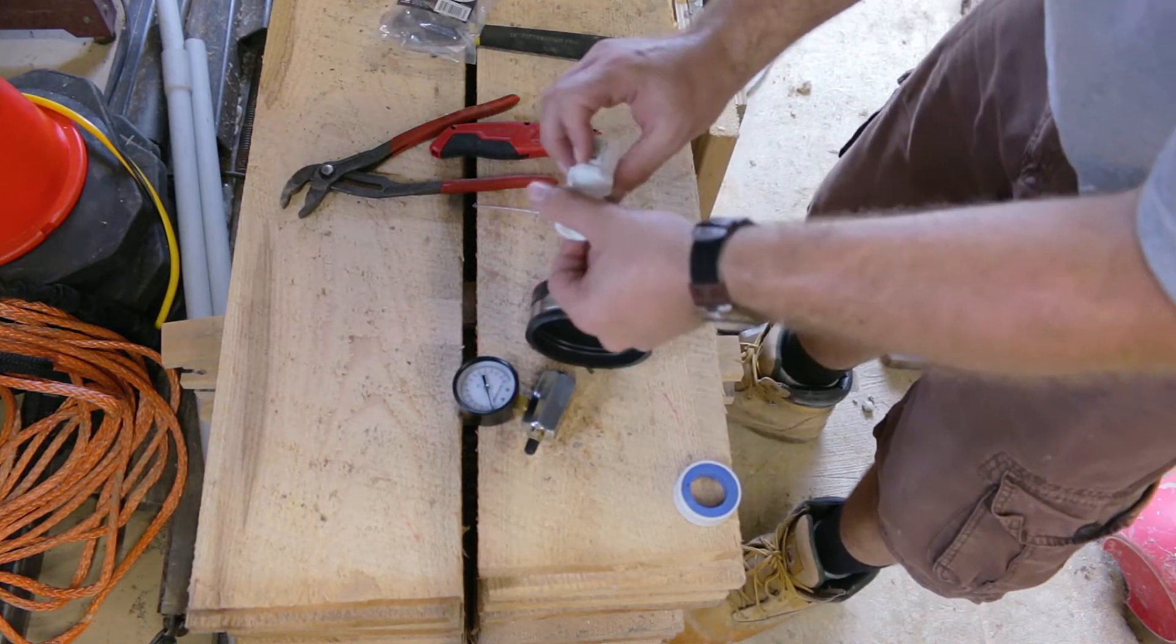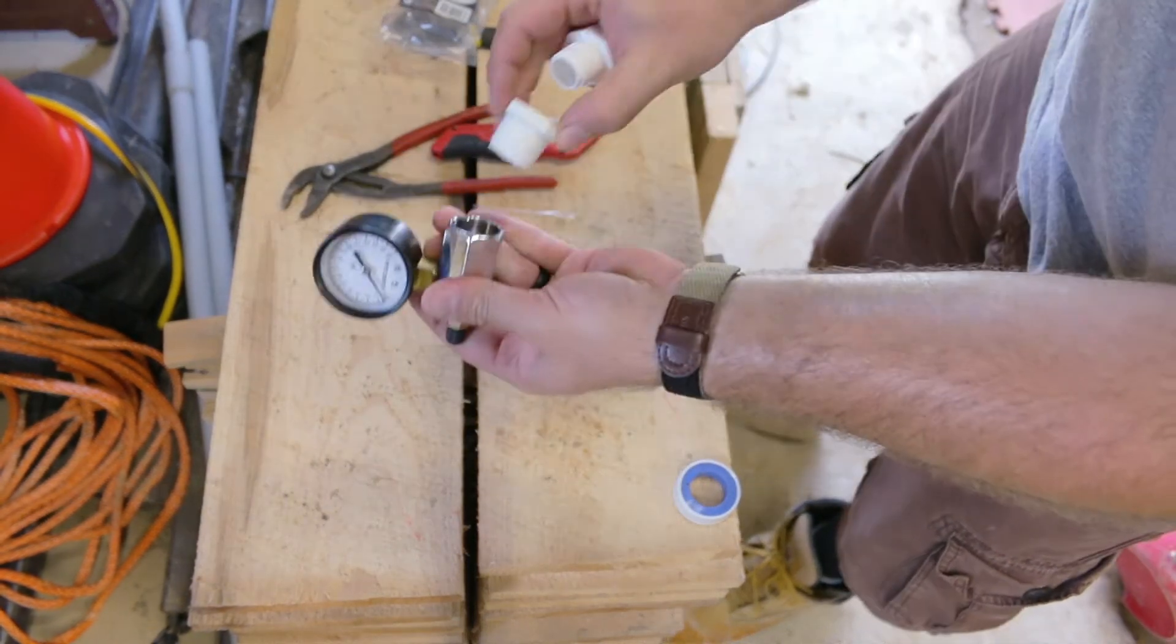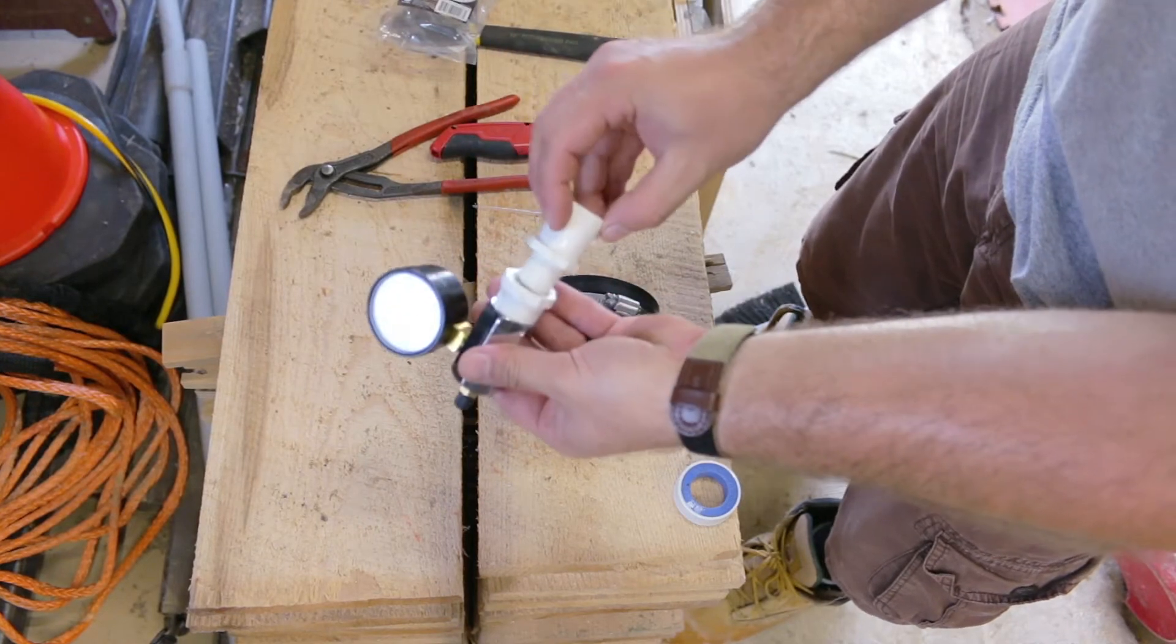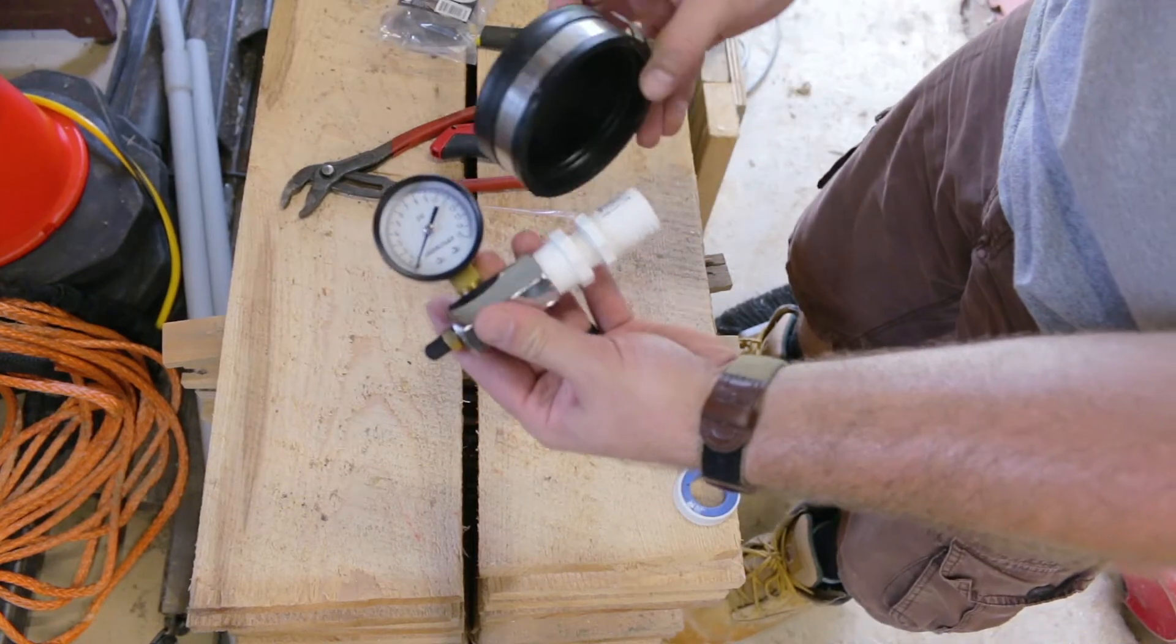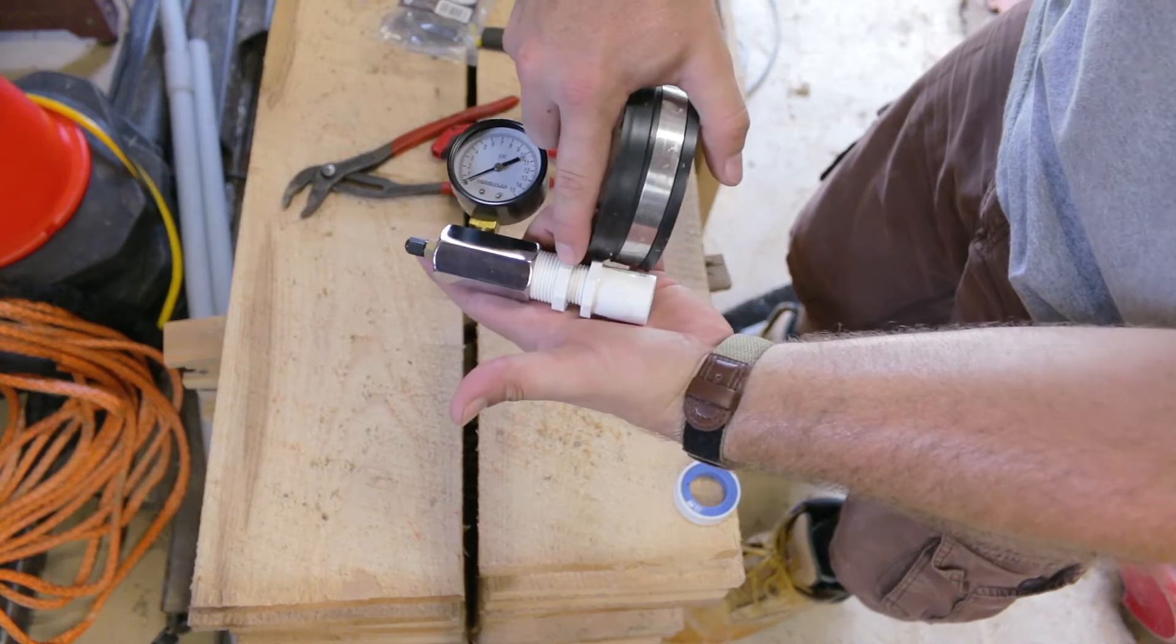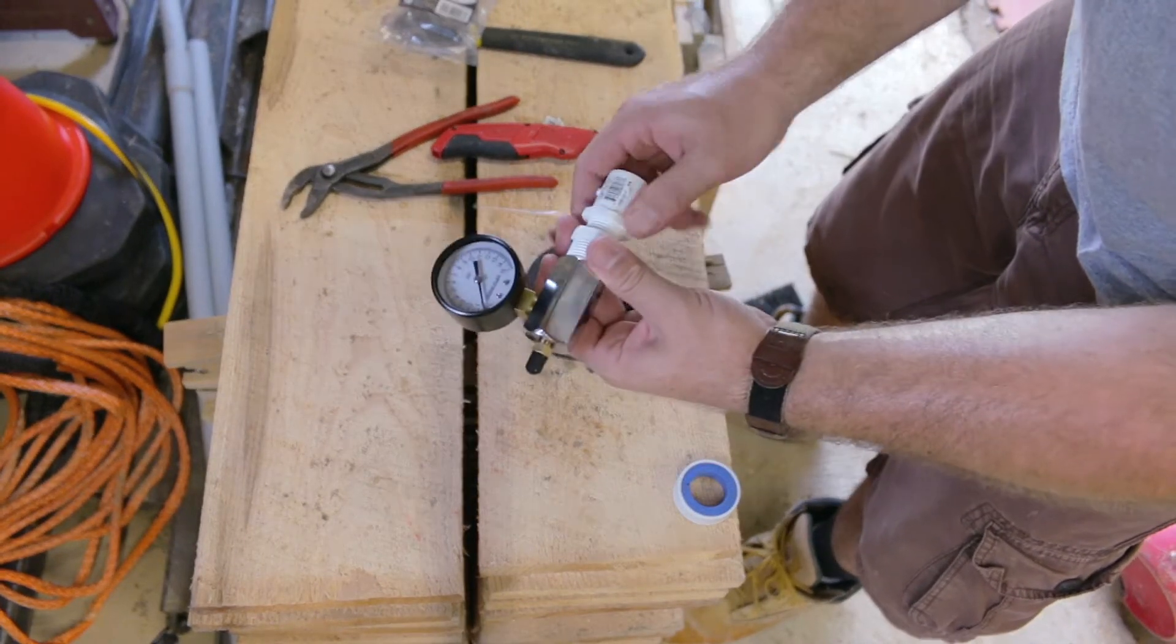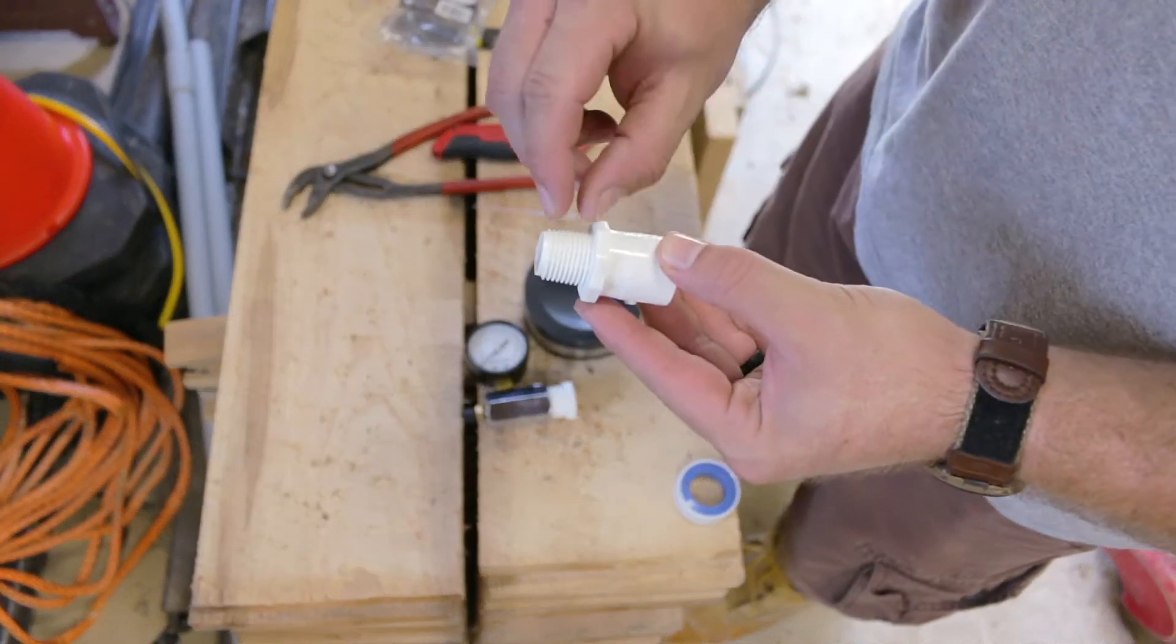So the game plan here is to take our gauge, thread this into our three-quarter inch onto our pressure gauge and then we have our half inch. We'll take our half inch adapter here and basically what we're going to do is that's going to be squeezing this section right here and pinch down on the top of this lid. The only problem with that is we've got to make a little modification to this adapter here. It's too long.